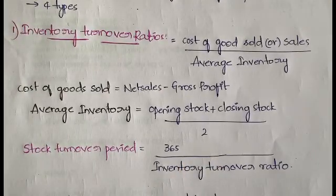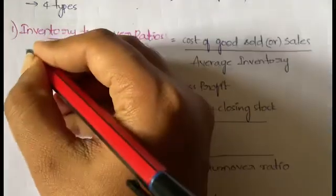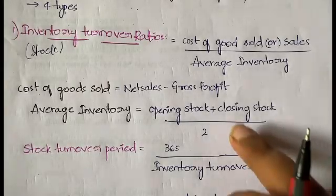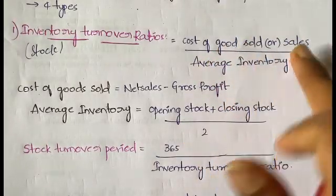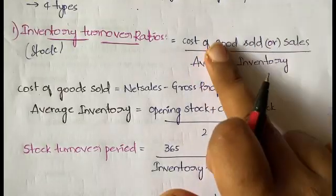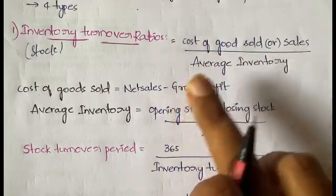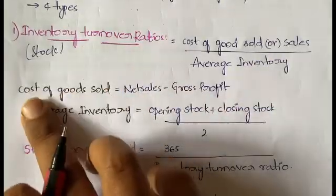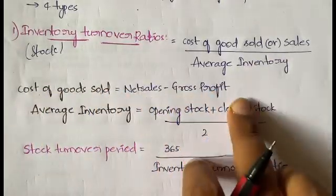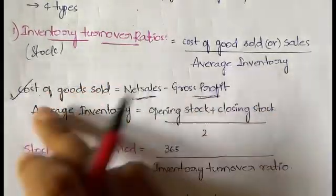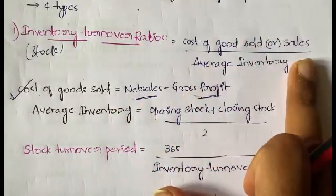The first type is inventory turnover ratio. Inventory is nothing but stock. The formula is: cost of goods sold divided by average inventory. You can also use net sales divided by average inventory. Cost of goods sold is calculated as net sales minus gross profit.